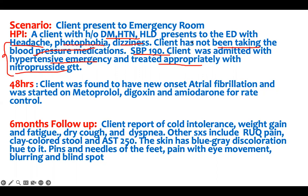All I've told you here is a patient came with hypertensive emergency and was treated with nitroprusside after admission. Then 48 hours after admission, there was a new onset of atrial fibrillation. For that, we started the patient on nitroprusside, digoxin, and amiodarone for rate control.